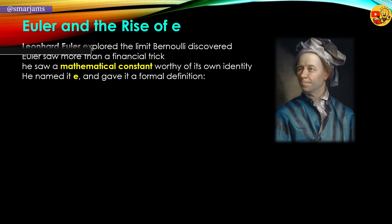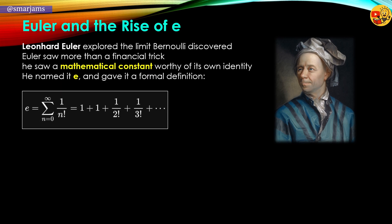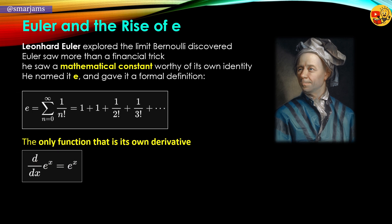Euler defined e formally: e equals the sum from n equals 0 to infinity of 1 over n factorial. That means 1 plus 1 plus 1 over 2 factorial plus 1 over 3 factorial and so on. Euler also showed something astonishing: the function e to the x is the only function that is its own derivative. The derivative of e to the x with respect to x is e to the x. This rare and elegant property placed e at the center of calculus.